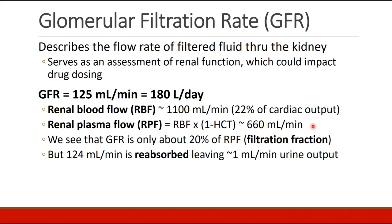GFR is only 125 milliliters per minute — about 20% of renal plasma flow — and that ratio is called the filtration fraction. Of this 125 milliliters per minute, 124 milliliters per minute is reabsorbed, leaving a net urine output of about 1 milliliter per minute.